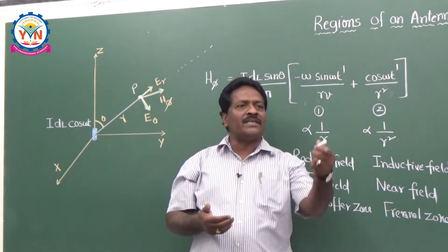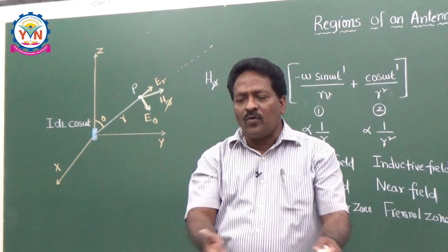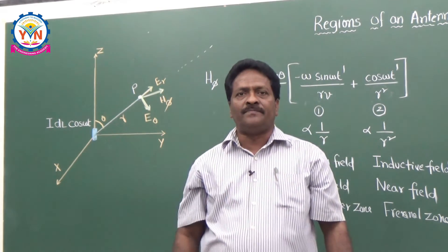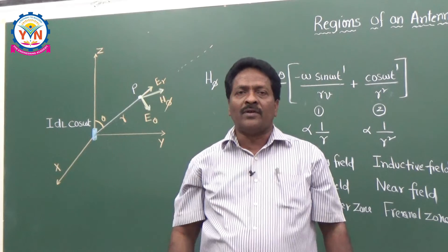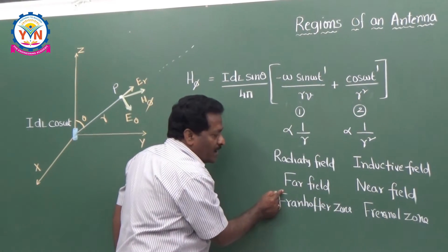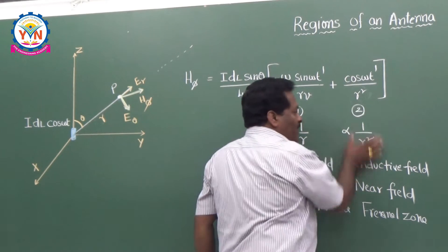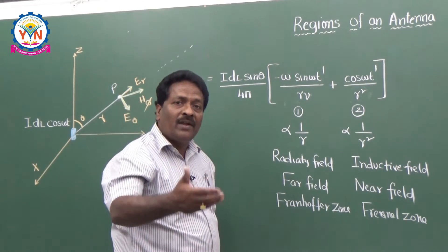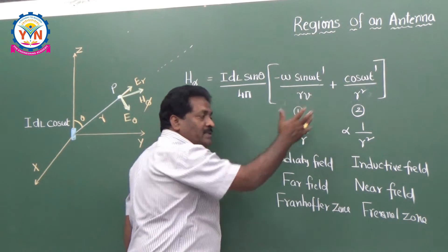Think of this classroom: students who are very close to me are not going to hear my voice clearly, because they are in the Fresnel zone. The students who are away from me will enjoy the lecture because they are in the Fraunhofer zone. So the nearest zone is the Fresnel zone and the far zone is the Fraunhofer zone. In the Fraunhofer zone you get the radiating field, while in the Fresnel zone you have the inductive field — a reactive field where energy is stored in the system, not radiated as information.